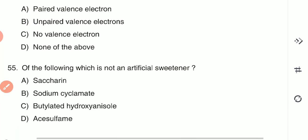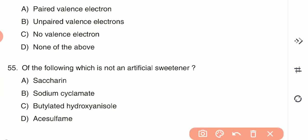Question 55: Which of the following is not an artificial sweetener? (A) saccharin, (B) sodium cyclamate, (C) butylated hydroxyanisole (BHA), or (D) acesulfame. Butylated hydroxyanisole (BHA) is not an artificial sweetener — it is an antioxidant.